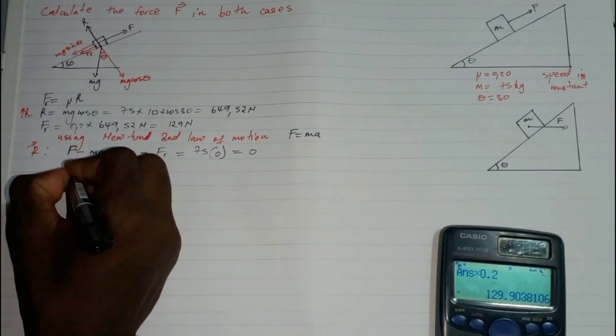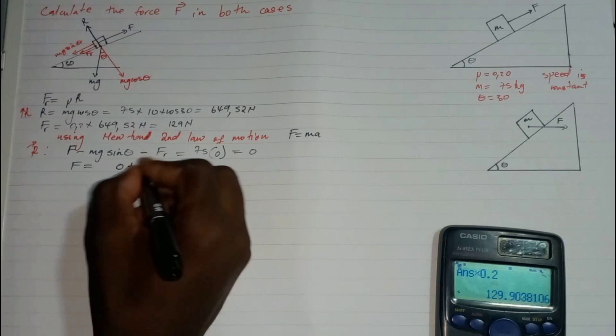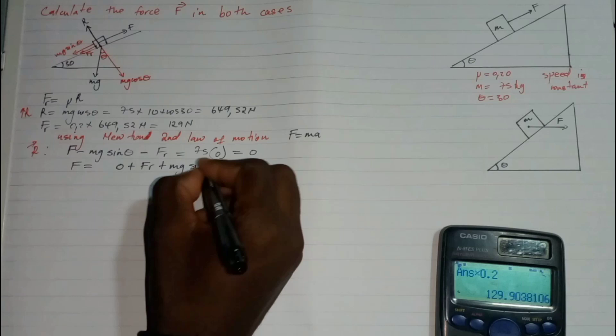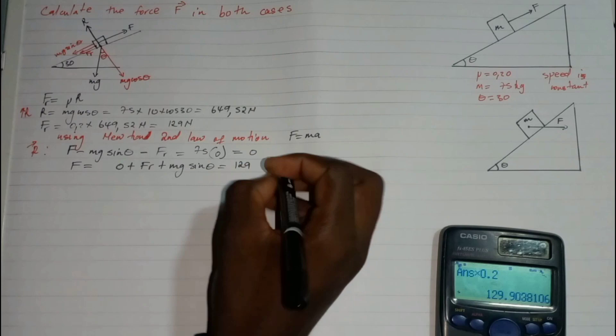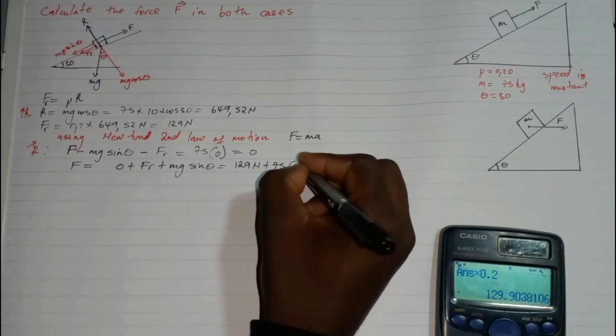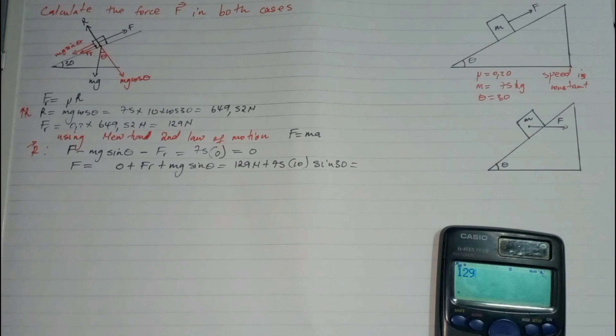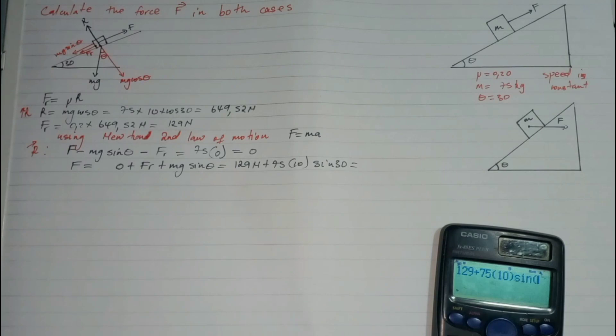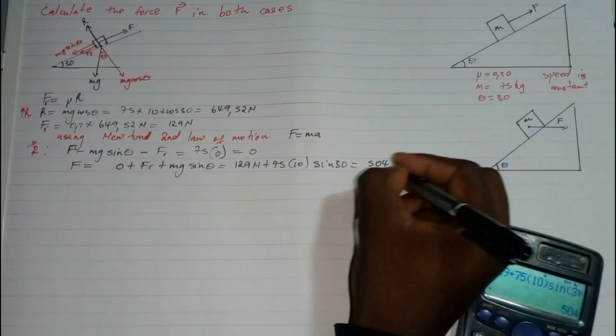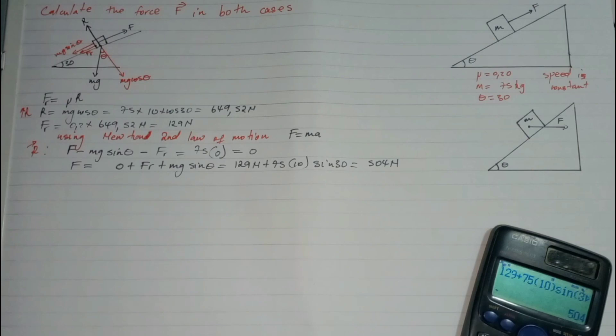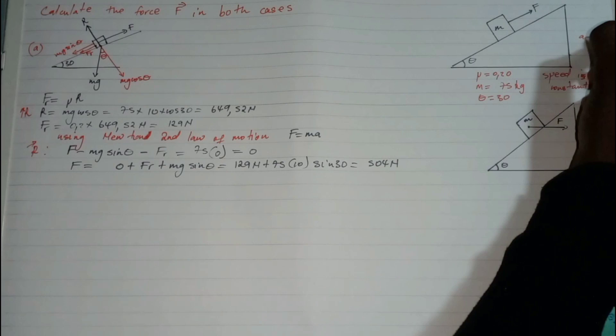Making F the subject: F equals Fr plus mg sinθ. So F equals 129 newtons plus 75 times 10 times sin 30, which gives 129 plus 375, and we get F equals 504 newtons. This is the magnitude of the force for Case A.